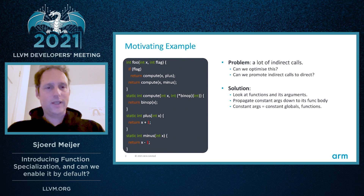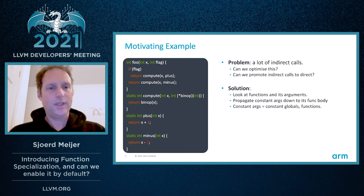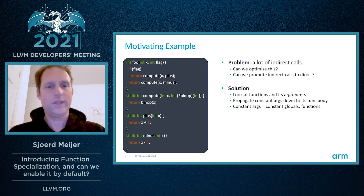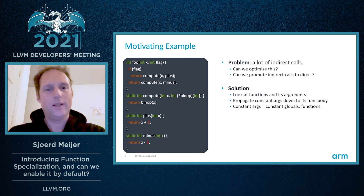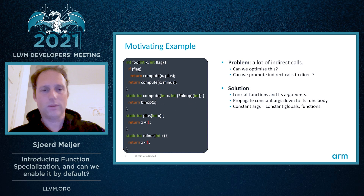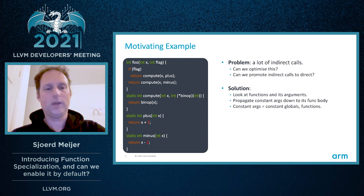Now, let's look at a motivating code example. On the left, you see four functions: foo, compute, plus, and minus. When we look at foo, we see that it invokes compute either with values x and plus, or with x and minus. The plus and minus are more interesting — they are functions. When we look at function compute, we see that it takes as the second argument a function pointer, and compute calls it so that we end up calling plus or minus.